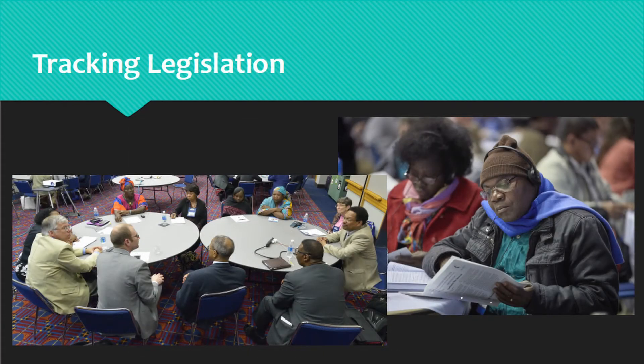In each of these scenarios for redirecting a piece of legislation, timing is very important. For a Minority Report, notice has to be given within two hours of the committee's vote. For reconsideration of legislation either on the Consent Calendar or not supported, a request has to be submitted by 3 p.m. on the day that the outcome is reported in the DCA. In the press of each day's business during General Conference, it could be easy for those deadlines to slip past you.